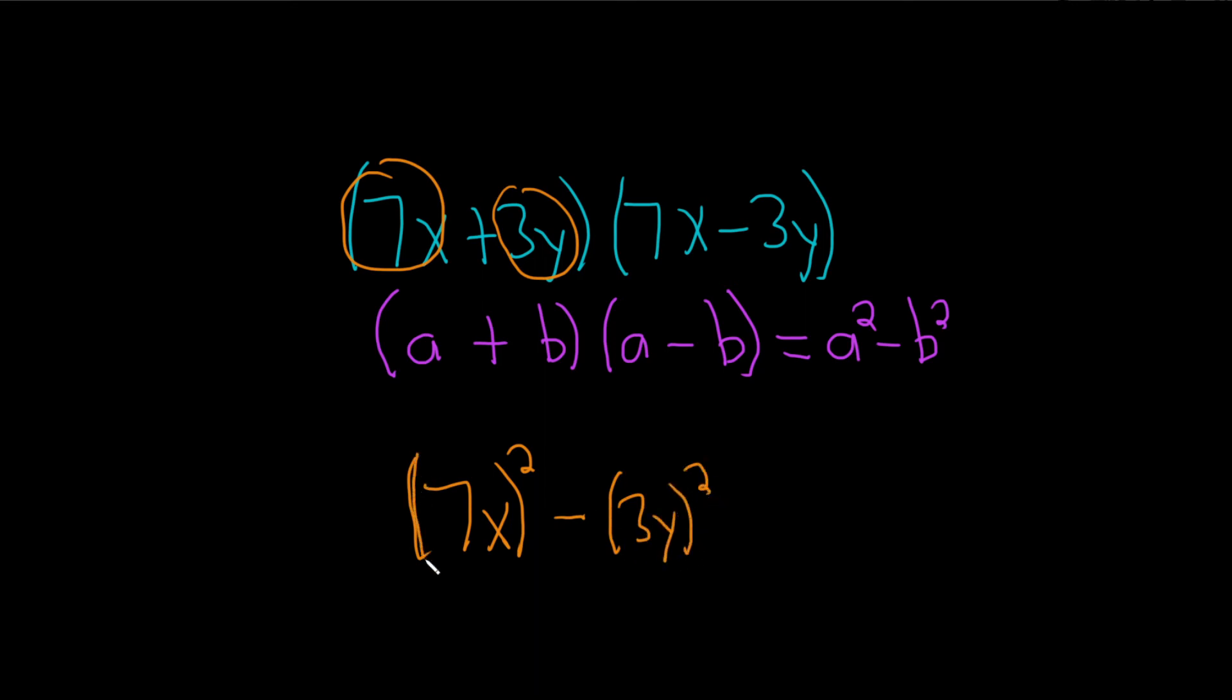To square 7x, what you do is you just square each piece. So you square the 7, so you get 49. And then you square the x, so you get x squared.